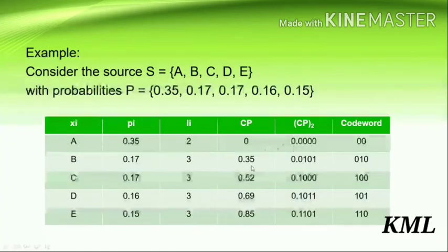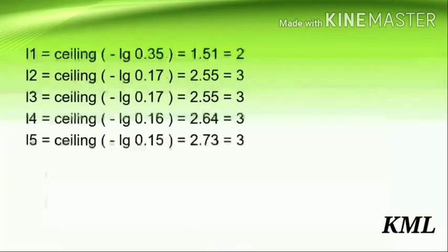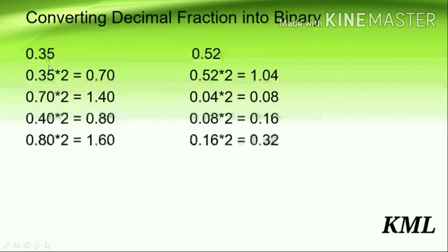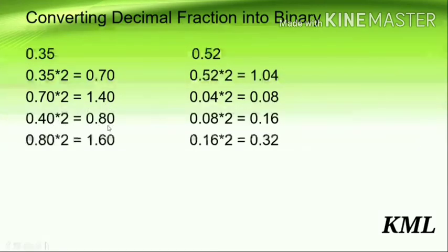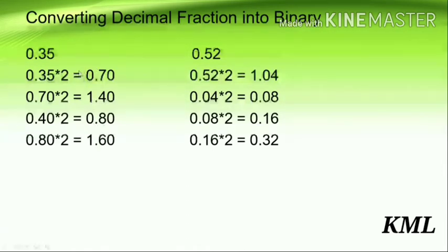To calculate binary for 0.35: multiply 0.35 by 2 to get 0.70, take the fractional part and multiply by 2 to get 1.40, take fractional part multiply by 2 to get 0.80, take fractional part multiply by 2 to get 1.60. Reading the digits to the left of the decimal point from top to bottom: 0, 1, 0, 1. So the binary equivalent of 0.35 is 0101.